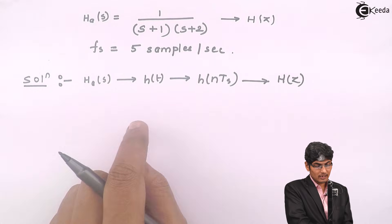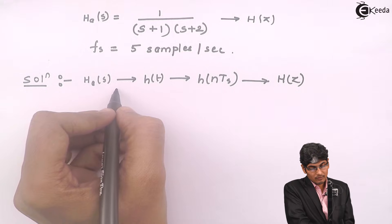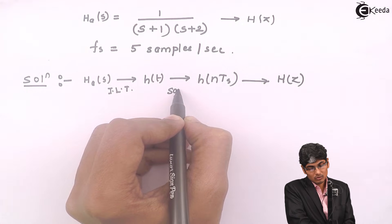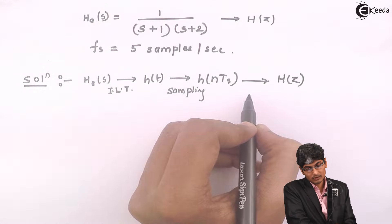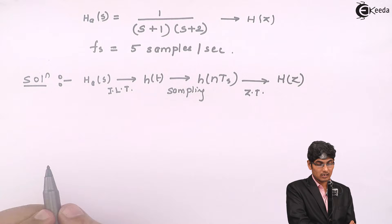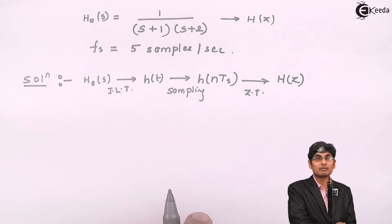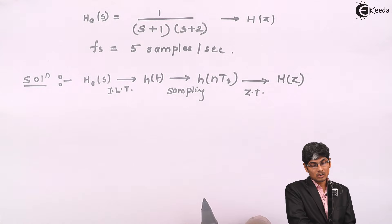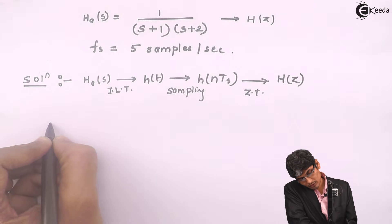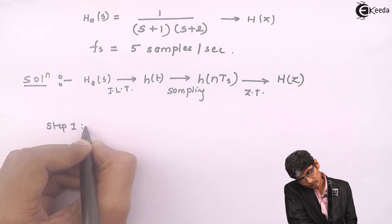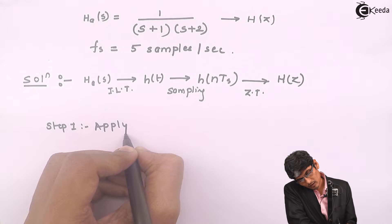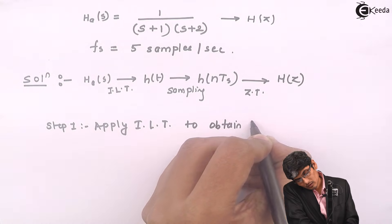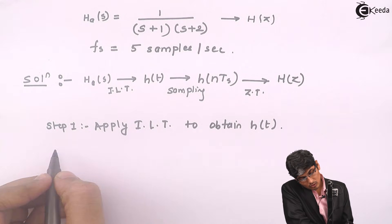In these four steps, I have H_A(S) and I need to obtain H(Z). To obtain H(T), we apply the inverse Laplace transform. Then I will do sampling with the given sampling frequency, and then apply the Z transform. So let us first apply the inverse Laplace transform on the given problem. For step 1, apply inverse Laplace transform to obtain H(T).